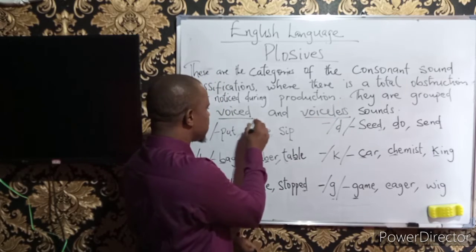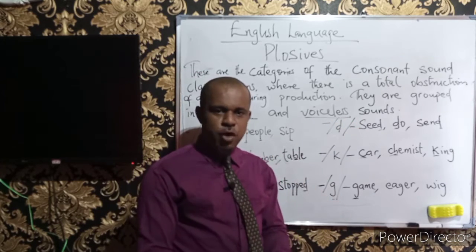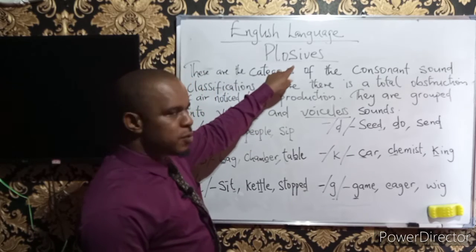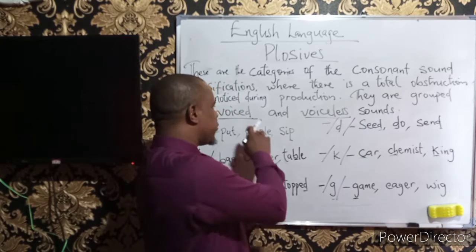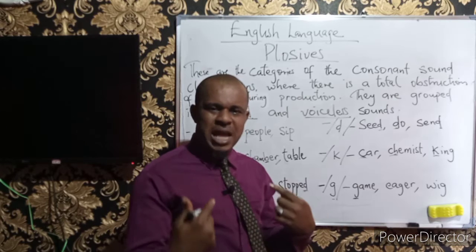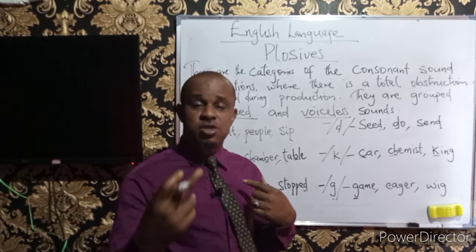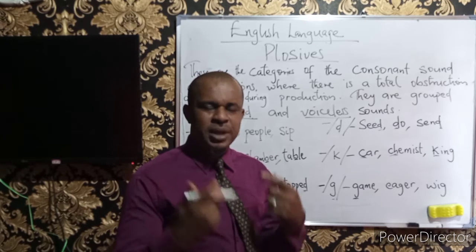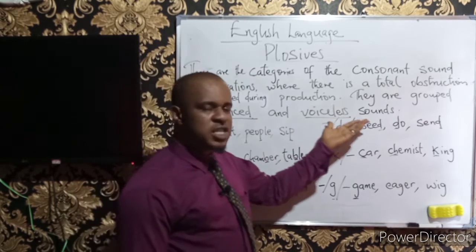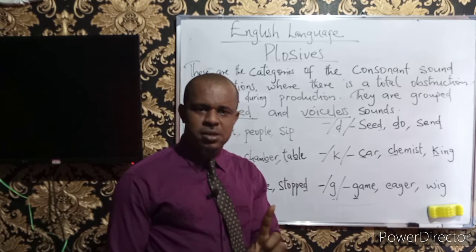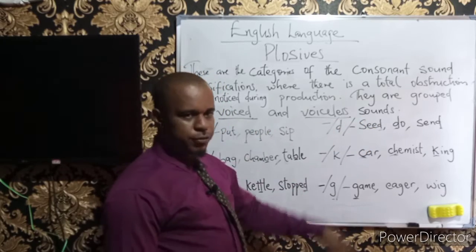We need to explain these two concepts: voiced sounds and voiceless sounds. When we talk about the voiced aspects of the plosives, these are sounds where, when produced, we notice some kind of vibration in our vocal cord. In the voiceless sounds, there is little or no vibration at all during their production. That's what we mean by voiced and voiceless.